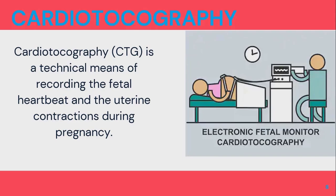The other signal recorded through cardiotocography — as the name has 'cardio' in it — is the fetal heart rate. So the two signals simultaneously acquired in cardiotocography are the maternal uterine pressure, or maternal uterine contractions, and the fetal heart rate.